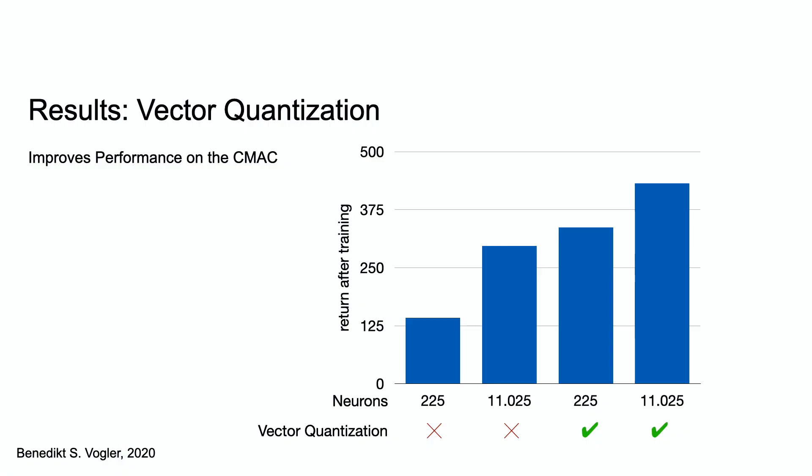With this approach, it is possible to outperform a net with just 2% of the neurons. The plot shows the average return in the cart-pole balancing problem.